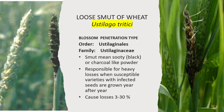Smut means the sooty, black, or charcoal-like powder that is actually the black spores of these fungi. These are responsible for heavy losses when susceptible varieties with infected seeds are grown year after year. Three to thirty percent crop losses are reported due to this disease.